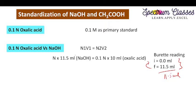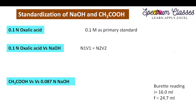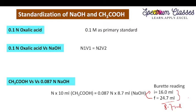From that standardization I calculated the normality of NaOH. With this NaOH I then titrated 10 ml of acetic acid solution. Subtracting the initial from the final burette reading, I get 8.7 ml of NaOH consumed against 10 ml of acetic acid. Putting all these values into the normality equation, the normality of acetic acid comes out to 0.075 normal.